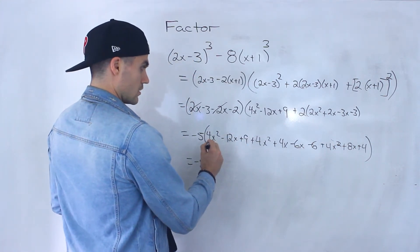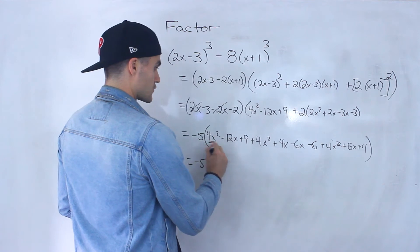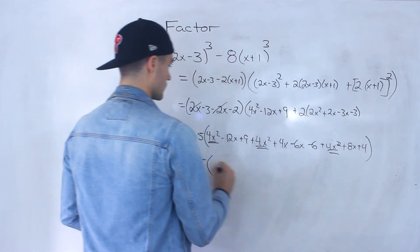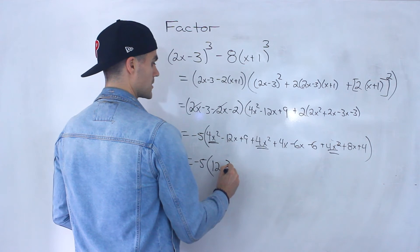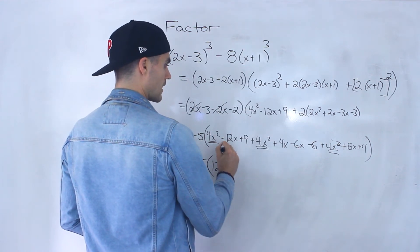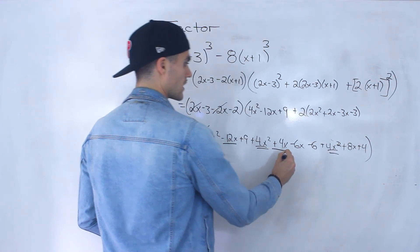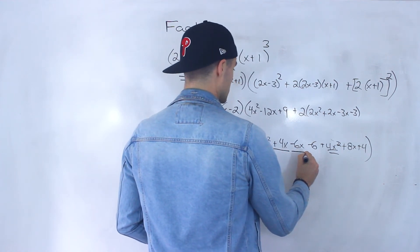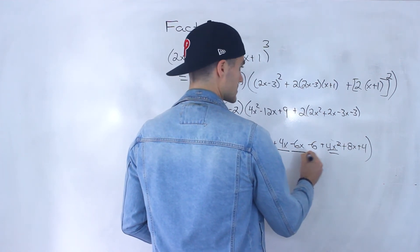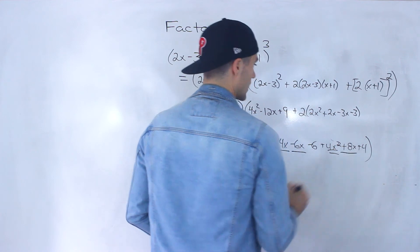So let's collect some like terms. 4x squared. So there's three of them. So we'd have 12x² in this bracket. And then we'd have -12x + 4x, which is -8x - 6x, which is -14x + 8x. That would give us -6x like that.